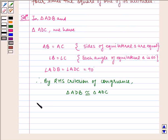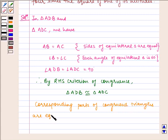Also, we know that corresponding parts of congruent triangles are equal. This implies BD is equal to DC.